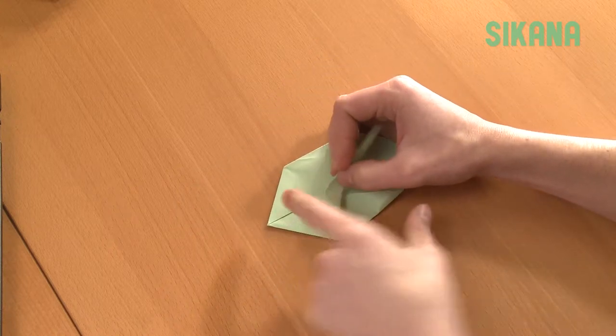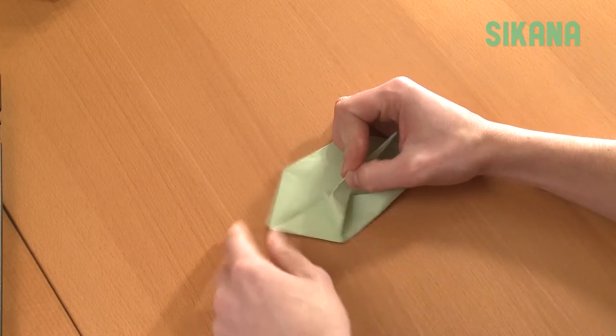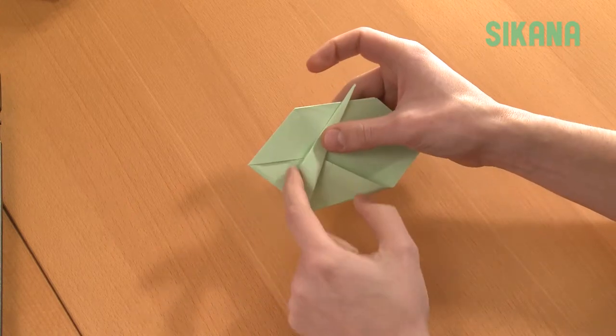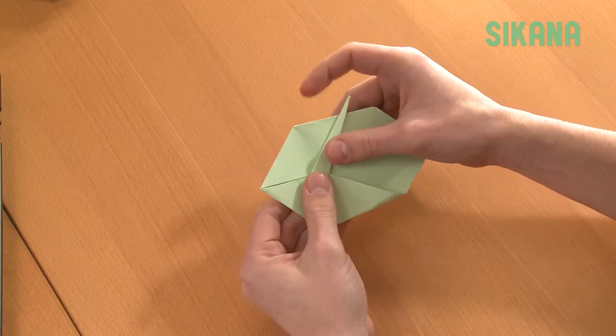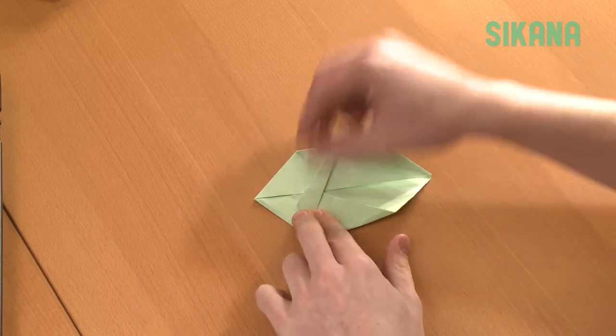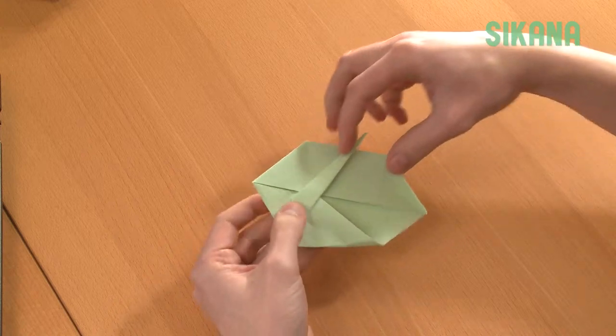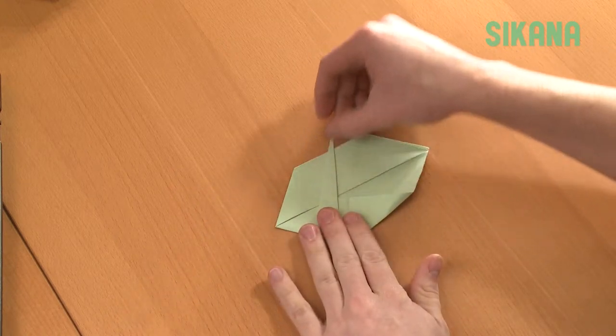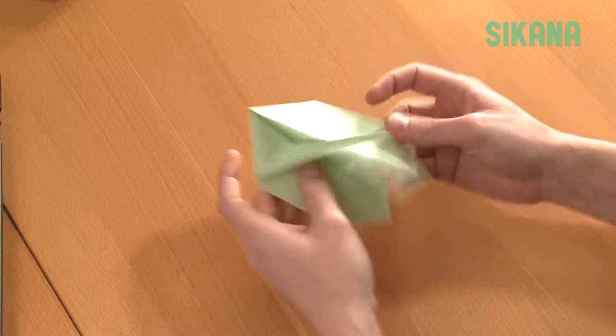Now, fold in the other direction with this point, which should be just below the center line. This line should be almost parallel to it. Fold the other point the same way.